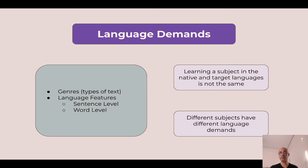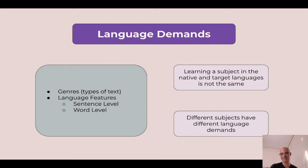There are two reasons. Learning a subject in the native and target languages is not the same. For example, if I'm learning science in my native language, I may be able to focus on science content. But if I'm learning science in English and English is not my native language, I may need to learn some of the language of English that will allow me to express what I'm learning in science. This is why it's important for us to be teaching genres and language features.